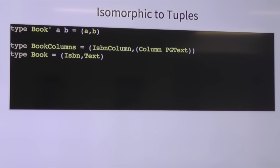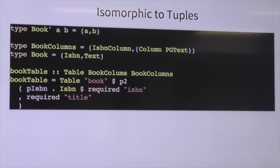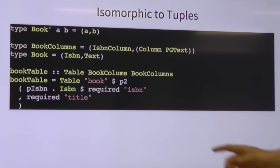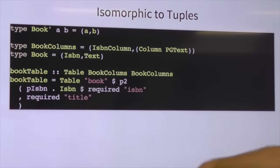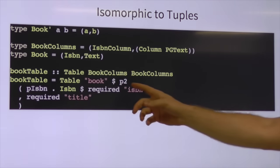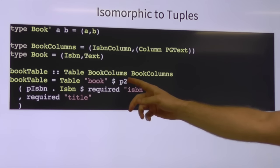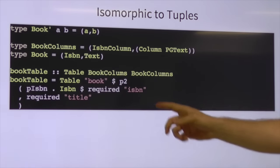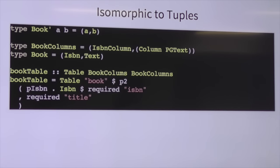Having names for your columns when making queries is really useful — you don't have to remember that it's column three. This is really useful when we start doing projections that aren't the entire table, like if we want to just select the ID. We can use tuples as an easy replacement for the data types we've defined. In product profunctors, there is a product profunctor defined for `P2` up to `P26`, so you can have tuples up to size 26.